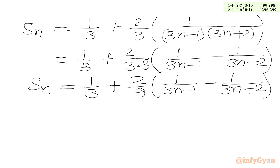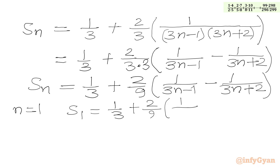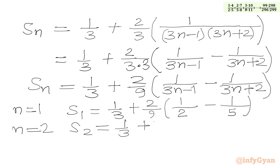Now we plug in n equal to 1 to get S1. The value is 1 over 3 plus 2 over 9, with the bracket giving 1 over (3 times 1 minus 1) minus 1 over (3 times 1 plus 2), which is 1 over 2 minus 1 over 5. For n equal to 2 we get S2, equal to 1 over 3 plus 2 over 9 times [1 over 5 minus 1 over 8]. Similarly for n equal to 3, n equal to 4, up to n equal to 99, since there are 99 terms.